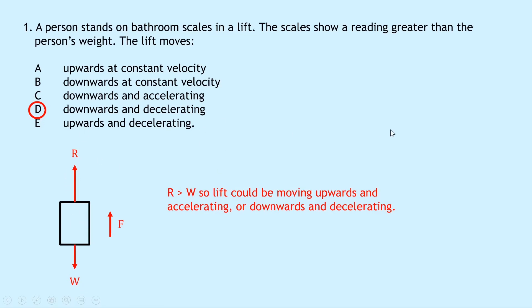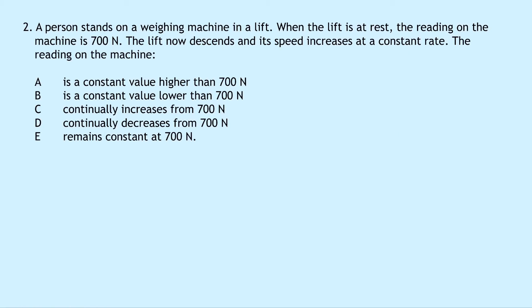Question two says a person stands on a weighing machine in a lift. When the lift is at rest, the reading is 700 newtons. The lift now descends and its speed increases at a constant rate. The options are: A) constant value higher than 700N, B) constant value lower than 700N, C) continually increases from 700N, D) continually decreases from 700N, E) remains constant at 700N. The reading of 700N at rest tells us the weight is 700 newtons. The lift descending with increasing speed means it is moving downwards and accelerating.